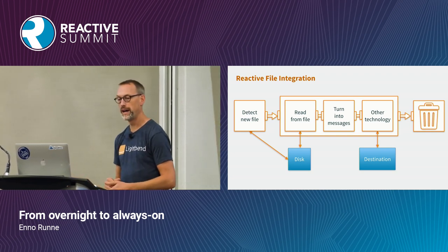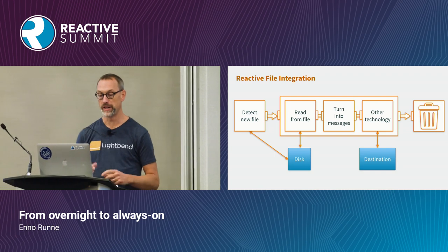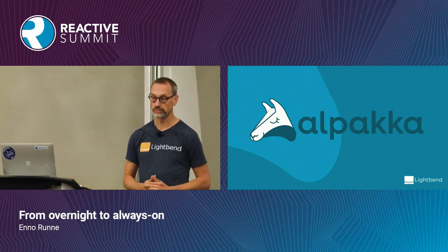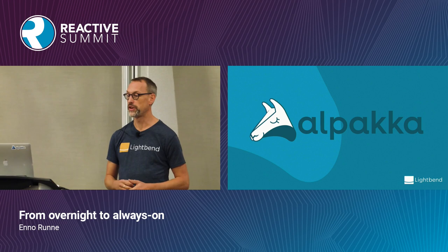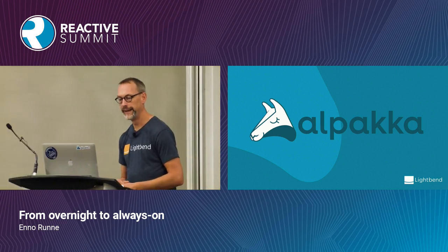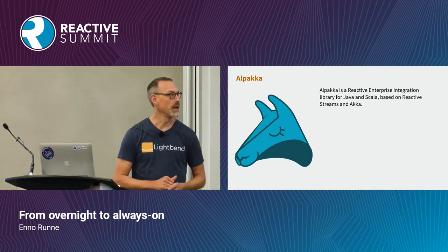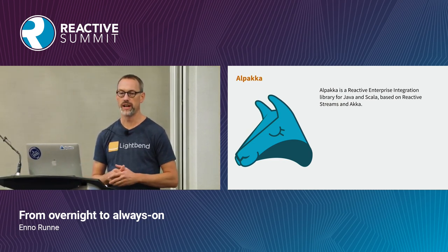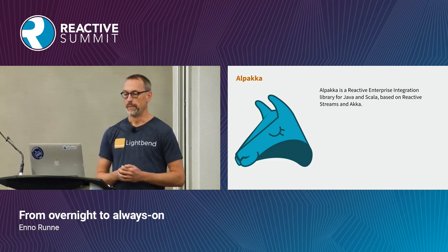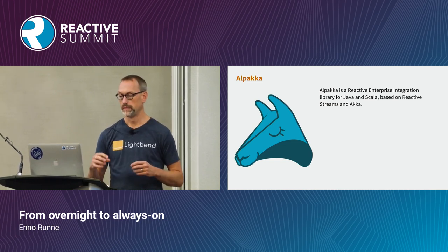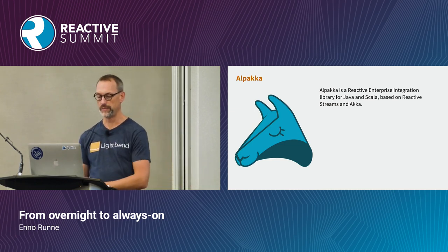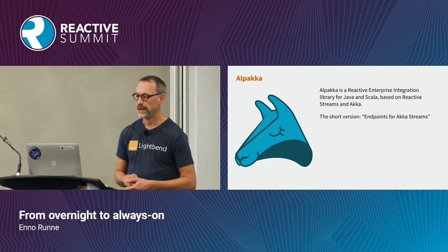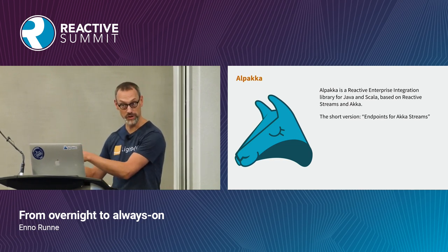And this destination bit - there are many destinations we support in Alpaca, which is a project under the Alpaca umbrella. Alpaca is just that - reactive enterprise integrations library. It supports Scala and connects other technologies to Akka Streams. If you want the short version: it's endpoints and Akka Streams, but we also have conversion and parsing as well.